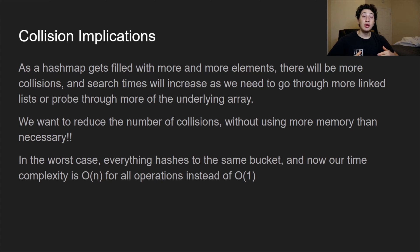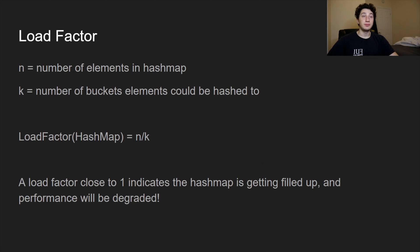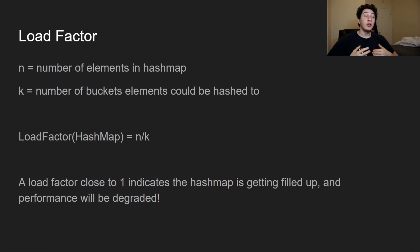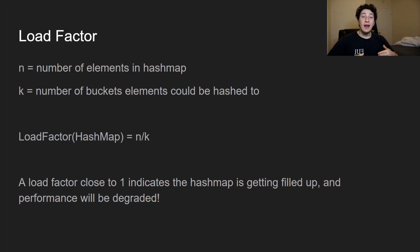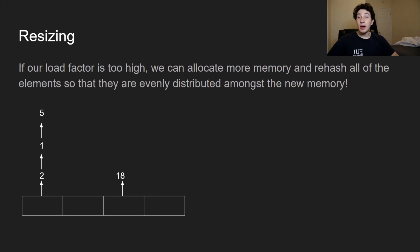It would be really bad if all operations happened in O(N) time, so what can we do? Let's introduce an important metric called the load factor. If there are N elements in the hash map and K potential buckets, the load factor is the ratio N/K. As the load factor approaches one, the hash map is getting more full, collisions increase, and performance degrades. So every time the load factor gets too close to one, we want to resize the hash map — this is critical for maintaining O(1) performance.